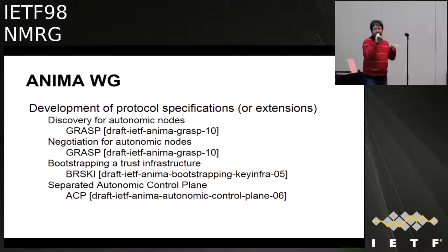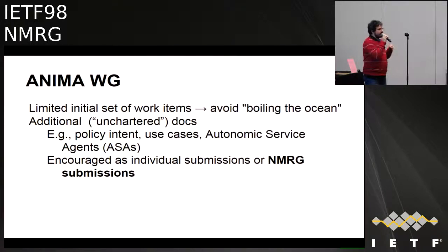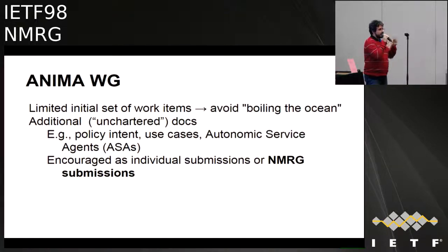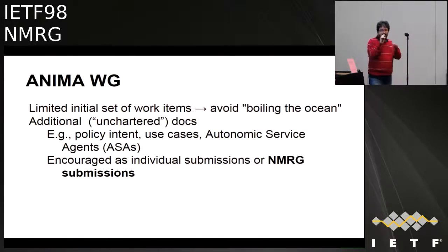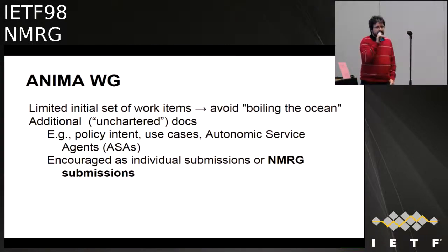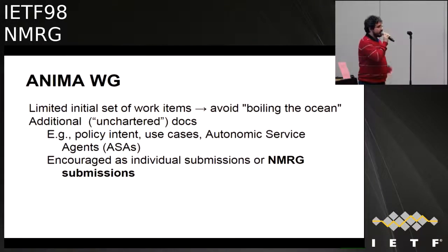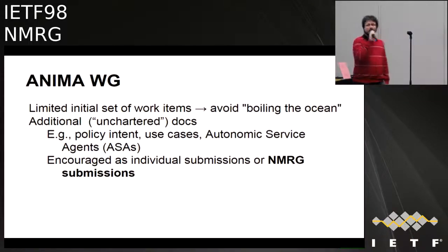As there is a limited set of functions defined in the charter — because it's important not to boil the ocean, but to have focused, specific work on feasible points of Autonomic Networking — some work presented at the UCAN BOF is out of scope, such as policy intent, use cases, and Autonomic Service Agents. The ANIMA charter states that this work can be encouraged as individual submissions or NMRG submissions, recognizing NMRG as a good home for such work.